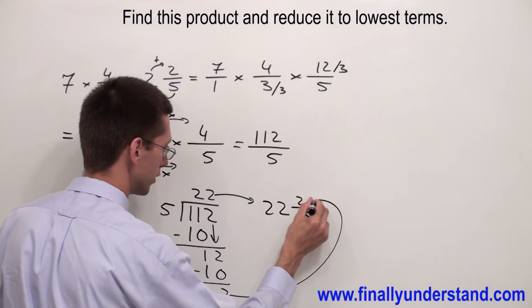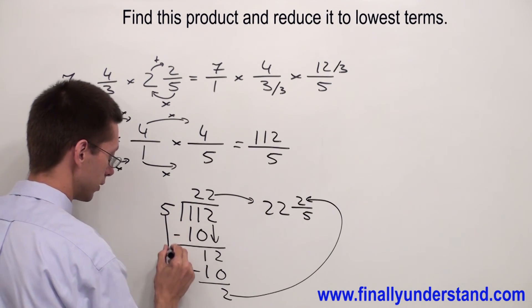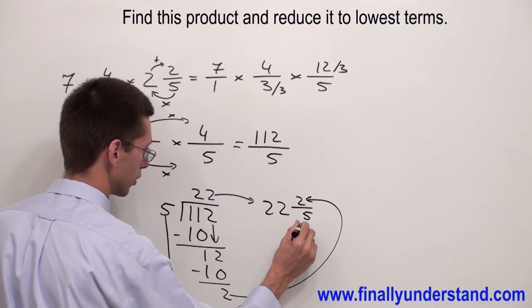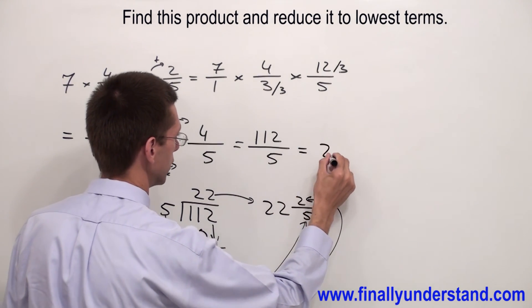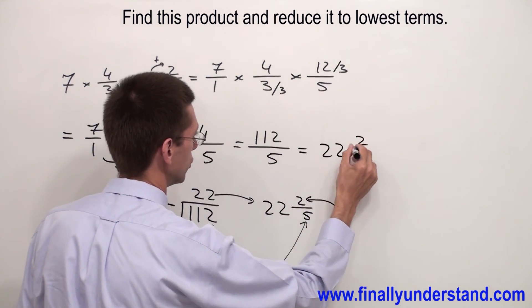Remainder goes to the numerator and the divisor goes to the denominator. I'm going to write the solution over here: 22 and 2/5.